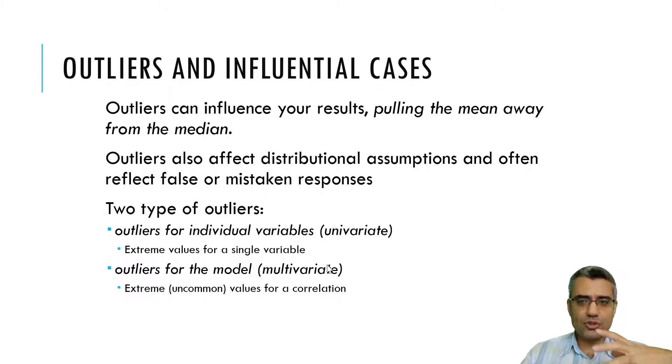Because outliers can influence your results, they can pull the mean away from the median. For univariate outliers, outliers can impact the distributional assumptions. For example, they can impact the multivariate normality, which is one of the assumptions for maximum likelihood, which is the estimation method that we use in SEM.